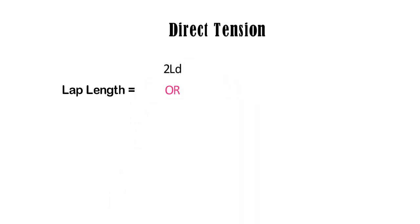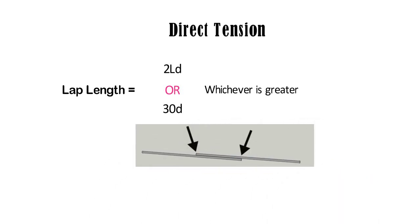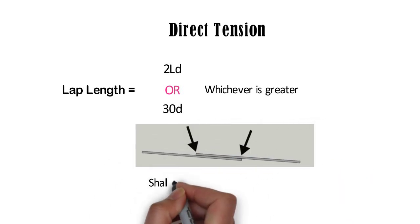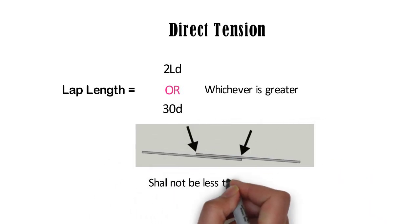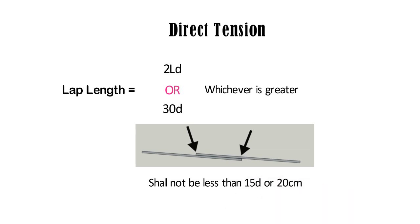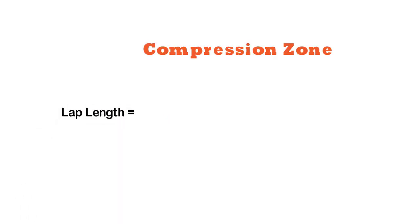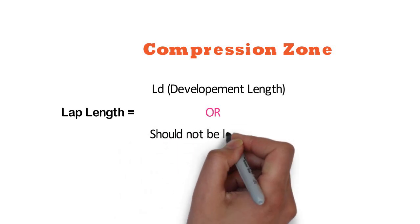For direct tension, the lap length should be 2LD or 30D, whichever is greater. In this case, the straight length of lapping of bars shall not be less than 15D or 20 cm. For lap length in compression, the lap length is equal to the development length calculated in compression but not less than 24D.